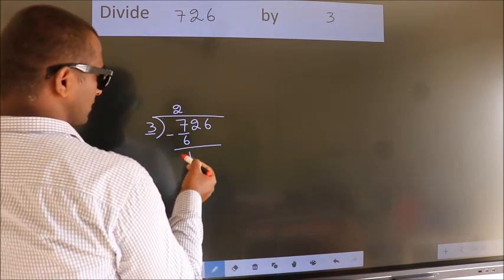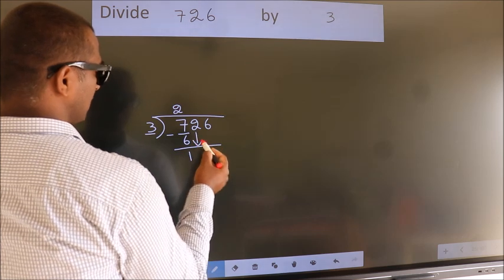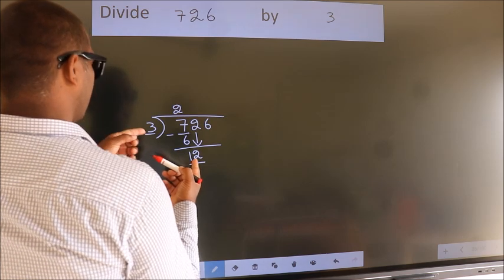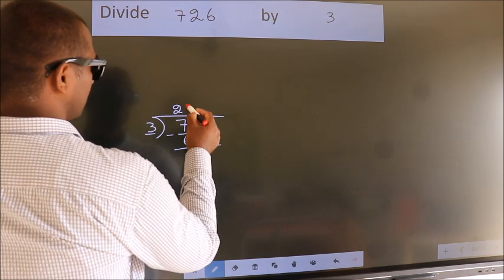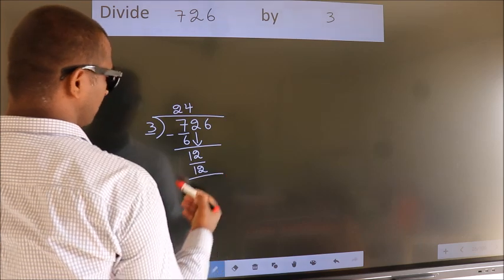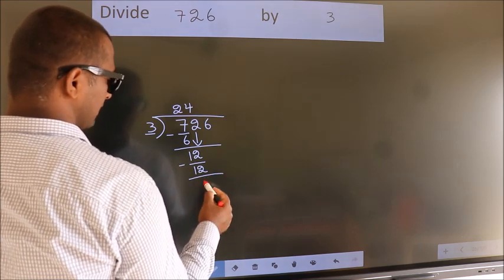After this, bring down the beside number. So 2 down, so 12. When do we get 12? In 3 table, 3 times 4 is 12. Now we subtract. We get 0.